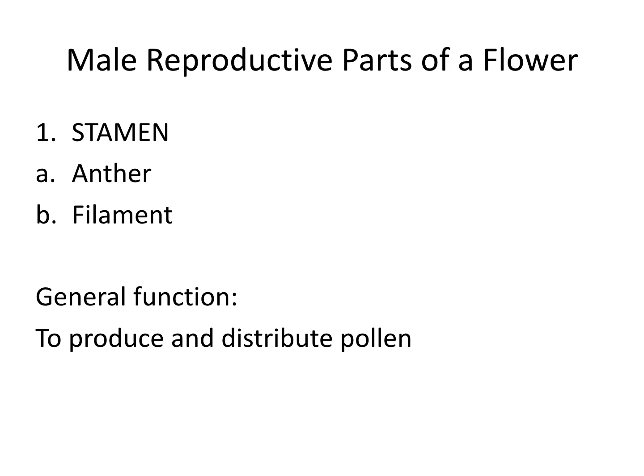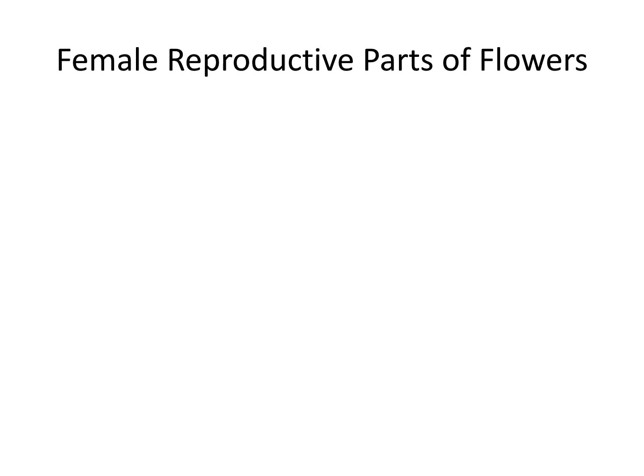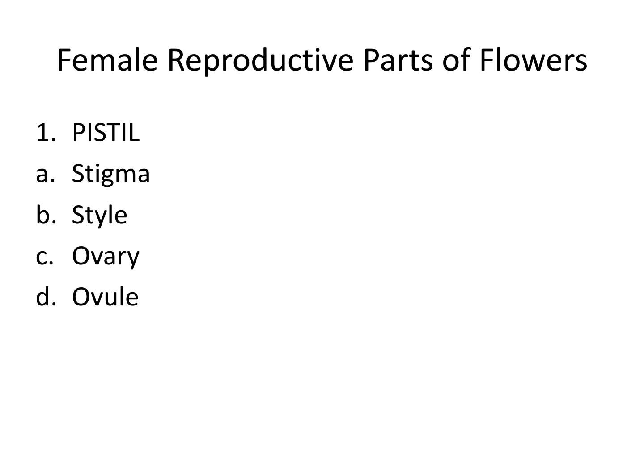Now let's go on to the female reproductive parts. With the female, we have several parts. The pistil is the overall part — when you talk about all the parts together, the female is called the pistil. It is made up of four things: the stigma, the style, the ovary, and the ovule.